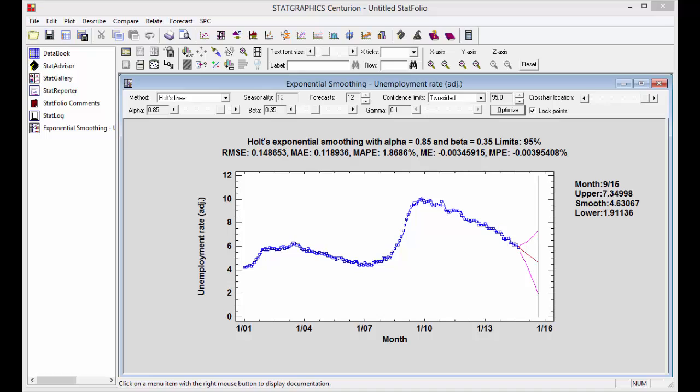One more comment about the forecasts. Although they look quite reasonable and predict that the unemployment rate will continue to go down, the 95% forecast limits show a lot of uncertainty in what's likely to happen over the next year. The unemployment rate could continue to go down, but it could certainly also go back up.